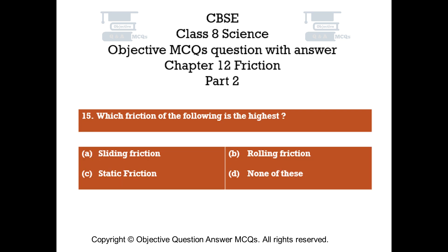Question number 15: Which friction of the following is the highest? Option A: Sliding friction. Option B: Rolling friction. Option C: Static friction. Option D: None of these.